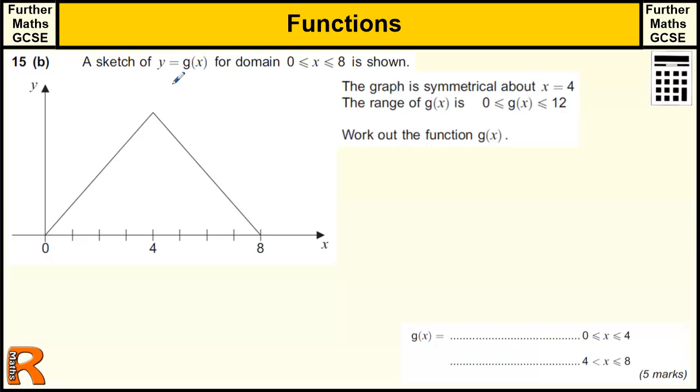Okay, so now we've gone to section B. So we've got a sketch of y equals g of x, this graph here, for between 0 and 8. And the graph is symmetrical about 4, so it's got a bit of symmetry here. And we're told the range of g of x goes from 0 to 12, so the range is how far up the y-axis it goes. So the highest point it goes, which is the top of this graph, is 12. So we know it goes between 0 and 12, and nowhere else. That tells us it's 12.